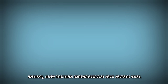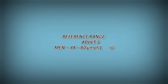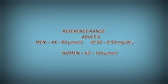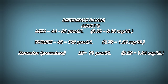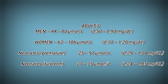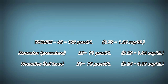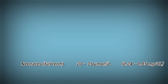Reference ranges: Adults — men: 44 to 80 micromol/L (0.50 to 0.90 mg/dL); women: 62 to 106 micromol/L (0.70 to 1.20 mg/dL). Neonates premature: 25 to 91 micromol/L (0.29 to 1.04 mg/dL). Neonates full term: 21 to 75 micromol/L (0.24 to 0.85 mg/dL).